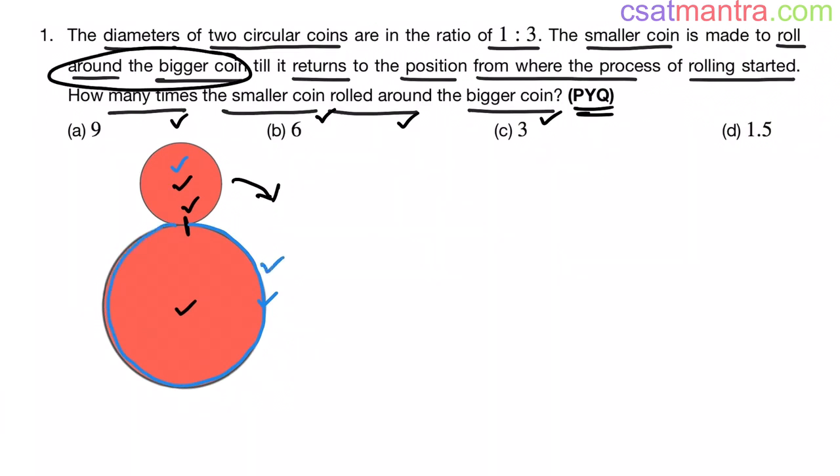What is the perimeter of circle? 2 pi r. But here diameters are given. So converting radius into diameter. Diameter is equal to 2 into radius. So this is pi into 2 r. So 2 r is the pi d. So perimeter of a circle is pi d in terms of diameter. In terms of radius it is 2 pi r. Now we can write pi d is the perimeter of bigger coin. The pi small d is the perimeter of smaller coin.